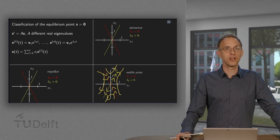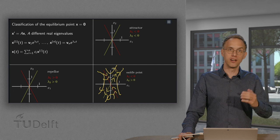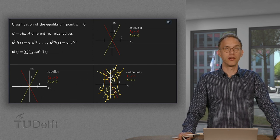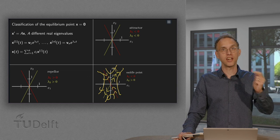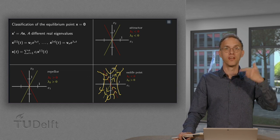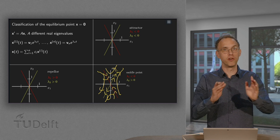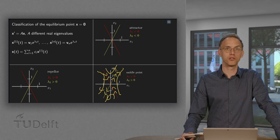So those are the three cases if you have real and unequal eigenvalues, a repeller if all of them are positive, an attractor if all eigenvalues are negative, and a saddle point if you have both positive and negative eigenvalues.